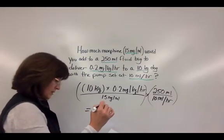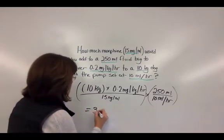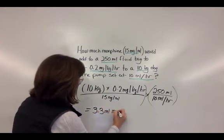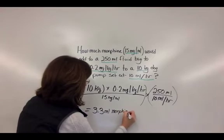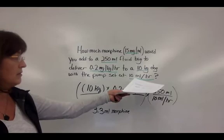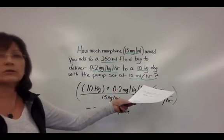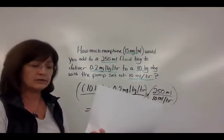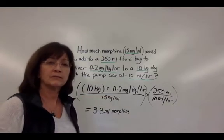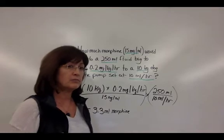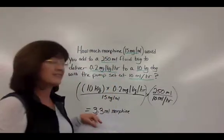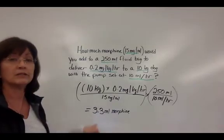The final answer is 3.3 mLs of the morphine solution that you're going to add to your 250 mL fluid bag, to run at 10 mLs per hour, in order to deliver a dosage rate of 0.2 mcg/kg/hour. I just pulled everything out of the question and plugged it into the formula to get the answer.